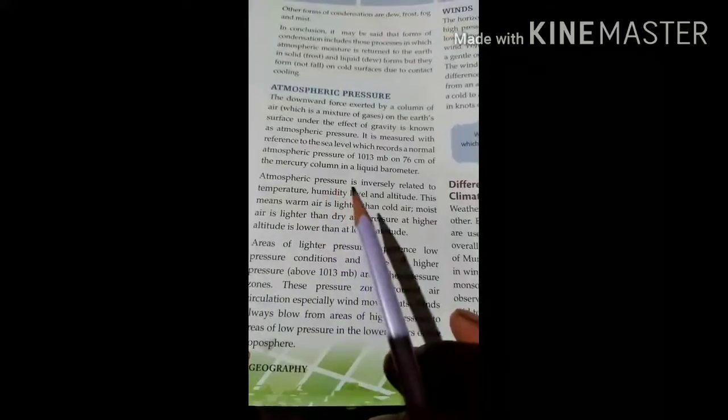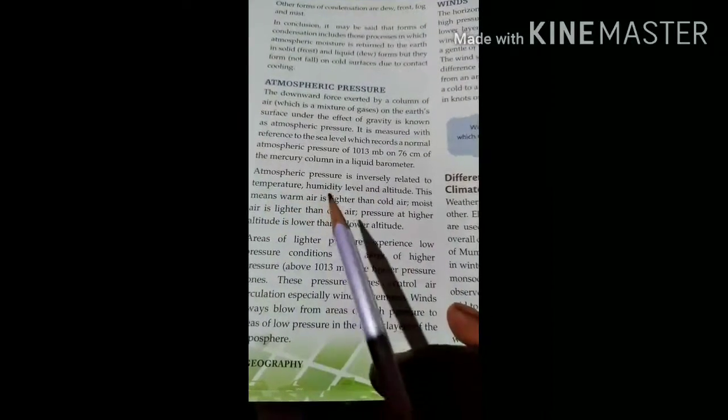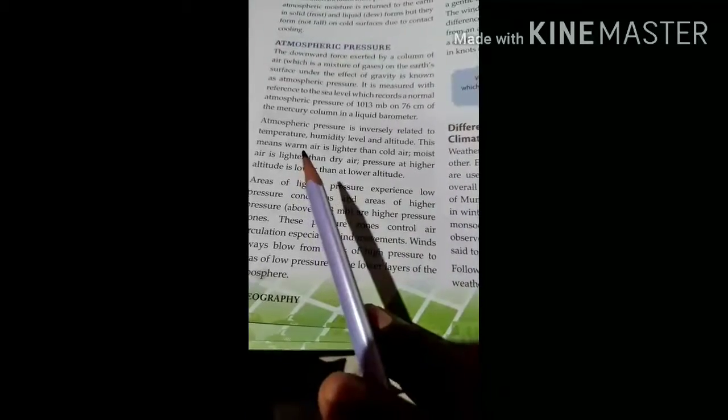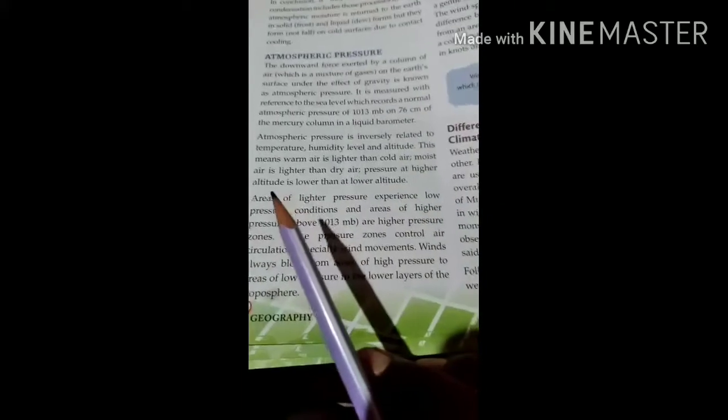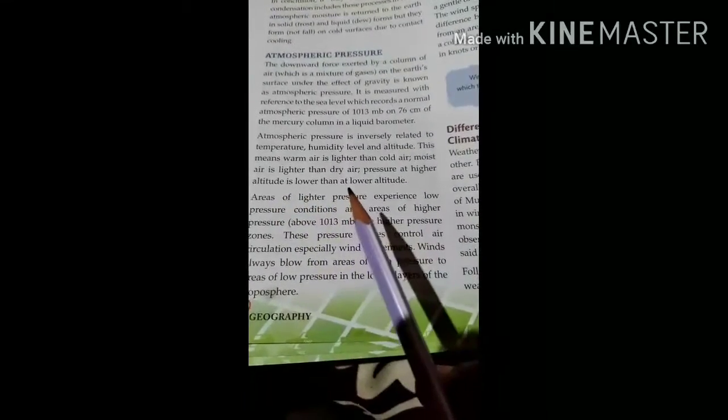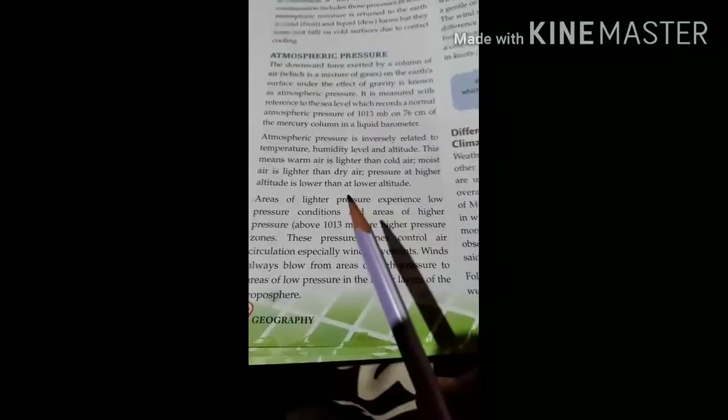Atmospheric pressure is inversely related to temperature, humidity, and altitude. This means warm air is lighter than cold air, moist air is lighter than dry air, and pressure at higher altitude is lower than at lower altitude.